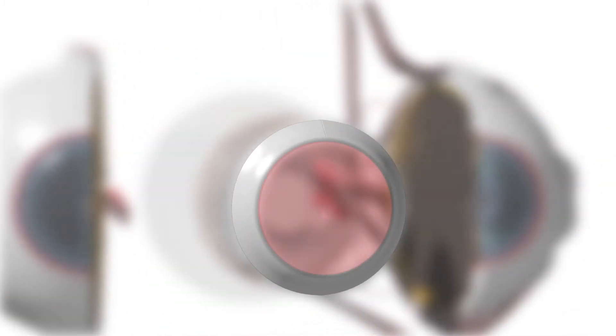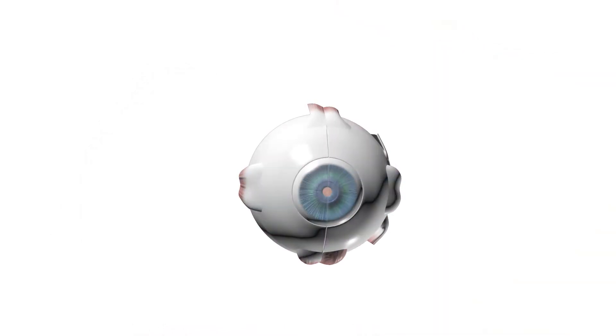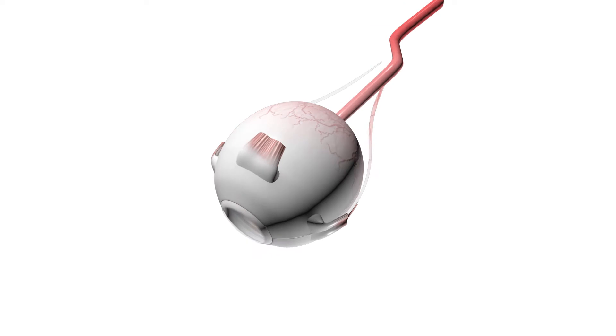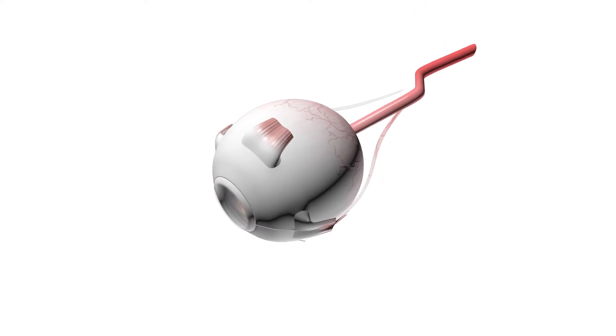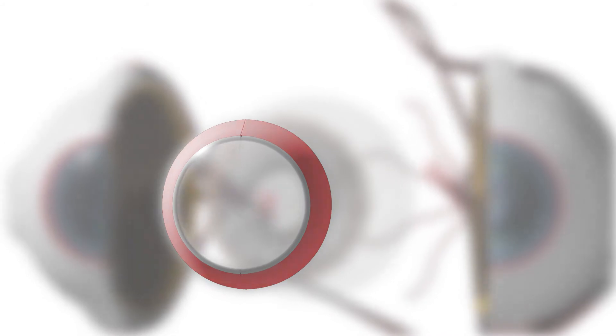Cornea: the transparent front window of the eye that serves as the major refractive surface. Sclera: the thick outer coat of the eye, normally white and opaque. Limbus: the junction between the cornea and sclera.